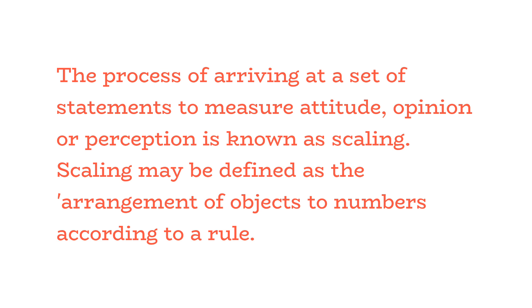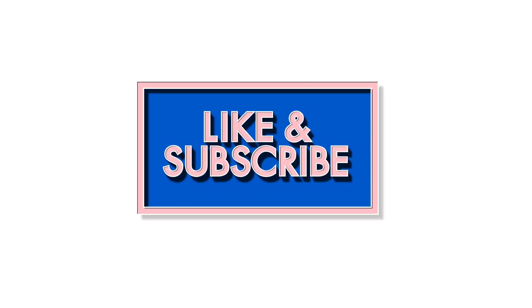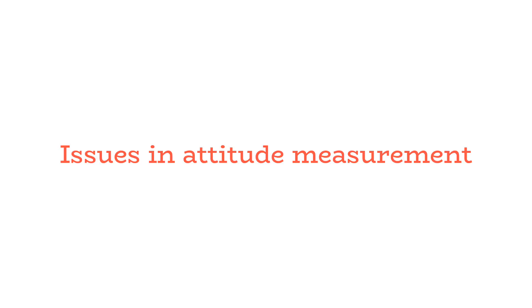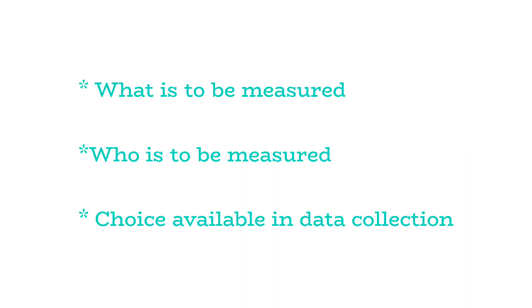The next area is Issues in Attitude Measurement. The first issue is: What is to be measured? The second issue is: Who is to be measured? The third issue is the choice available in data collection techniques.